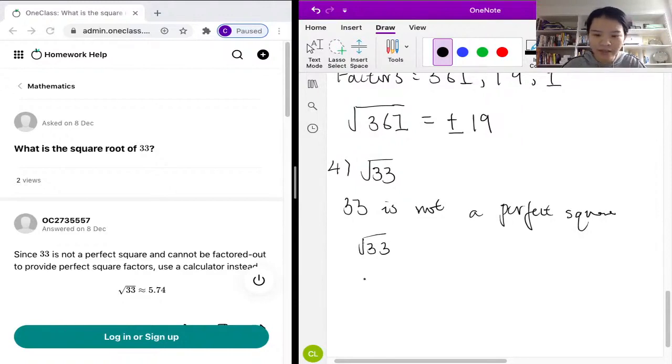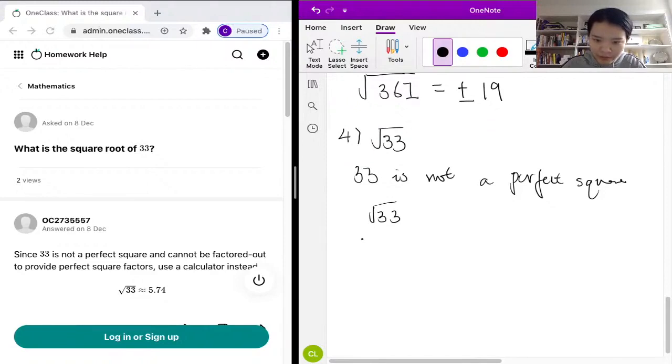First, let's make an estimation. We know 25 is a perfect square and the square root of 25 equals 5. We also know 36 is a perfect square and the square root of 36 is 6. 33 is between 25 and 36, and it's closer to 36 than it is to 25.